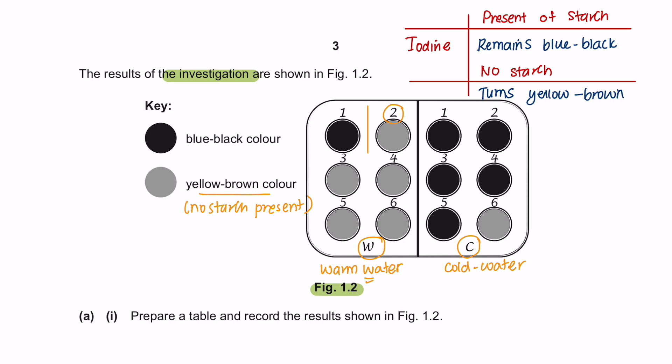meaning that there is no starch present. Whereas in cold water, it takes after 5 dimples at the 6th dimple to notice no starch present. So the amylase took a longer time in cold water to break down the starch completely into maltose.